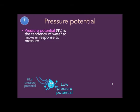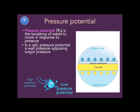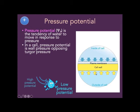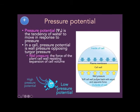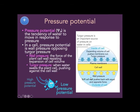The other component of water potential is pressure potential (psi-sub-p) — the tendency of water to move in response to pressure. In a cell, you have pressure potential in the form of wall pressure opposing turgor pressure. Turgor pressure is when the cell is very full and water is pushing out on the cell membrane, but the wall keeps the cell from bursting and pushes back. Wall pressure is the force of the cell wall resisting the cell getting bigger; turgor pressure is the water pushing out on the cell wall.